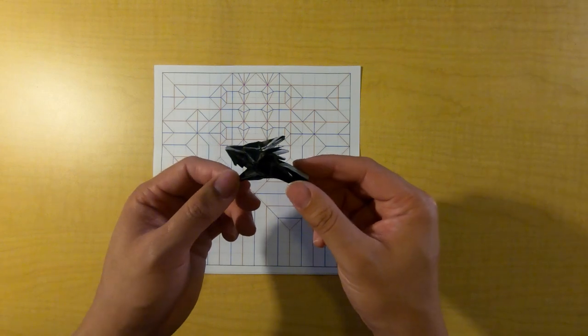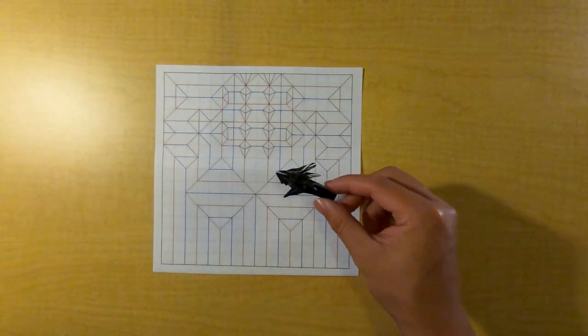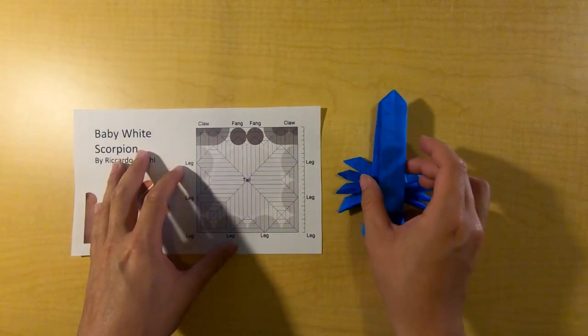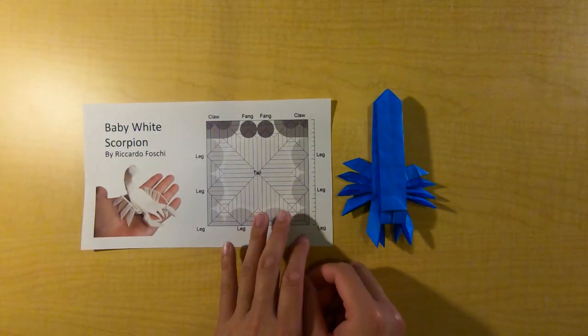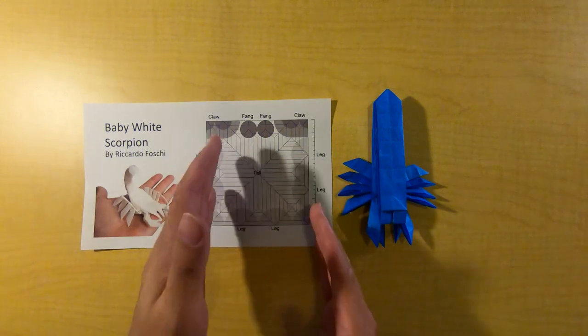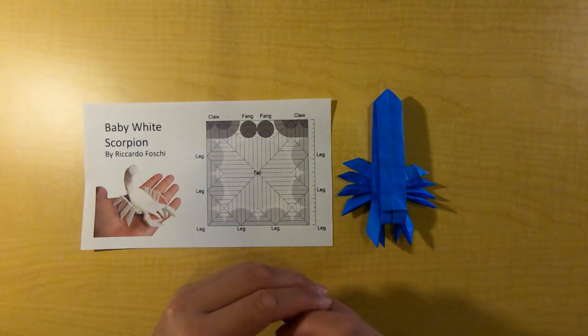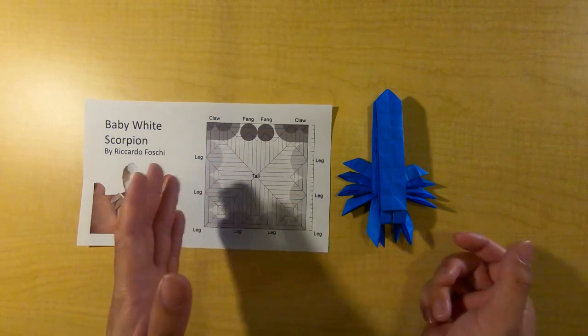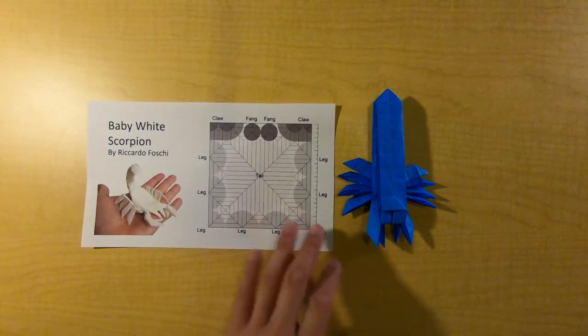Yeah, this should be pretty fun and a little challenging. This is the second exercise we're going to do. Now this is the full model of the scorpion by Ricardo Foshi, and thank you Ricardo for giving me permission to use your design for this class.